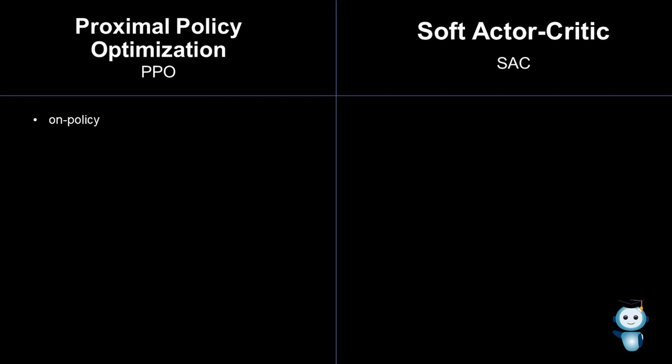PPO is an on-policy algorithm, meaning that it needs to constantly observe and act in an environment to improve. SAC, however, is an off-policy algorithm and can therefore store and internally repeat experiences collected during training in a so-called experience replay buffer. That's quite helpful in environments where the agent has unused computational resources between taking actions.